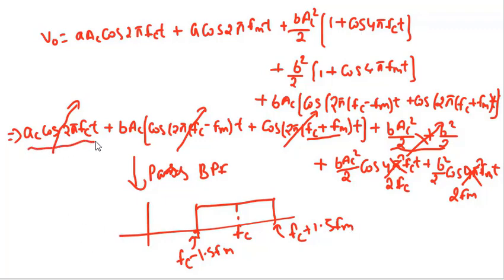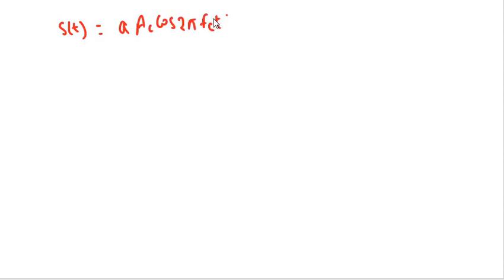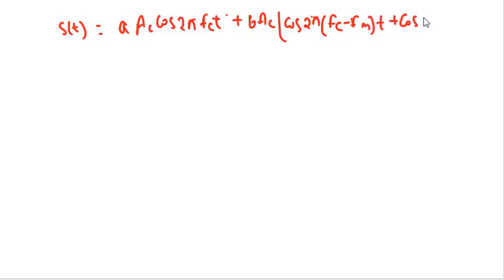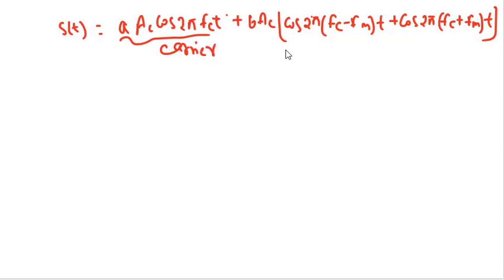So only three components pass: A·Ac·cos(2π·fc·t), and b·Ac·Am·cos(2π(fc−fm)t), and b·Ac·Am·cos(2π(fc+fm)t). The output s(t) of the band pass filter is: A·Ac·cos(2π·fc·t) plus b·Ac·Am·[cos(2π(fc−fm)t) + cos(2π(fc+fm)t)]. This is the carrier, the lower sideband, and the upper sideband of the amplitude modulated signal.